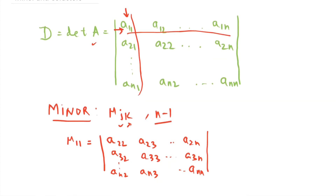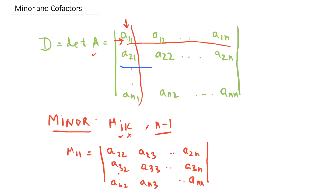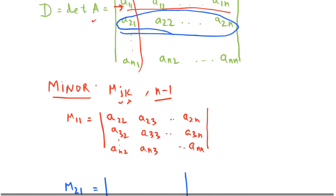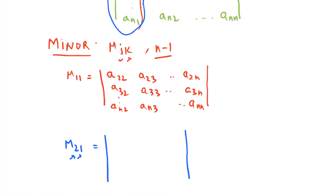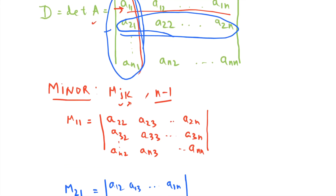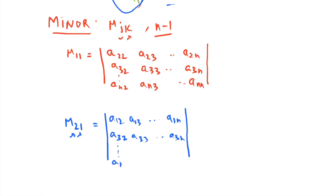Let's take one more example. To evaluate M_21, this is the submatrix obtained from matrix A by removing the second row and the first column. What you're left with is: a_12, a_13, ..., a_1n; then a_32, a_33, ..., a_3n; and a_n2, a_n3, ..., a_nn.